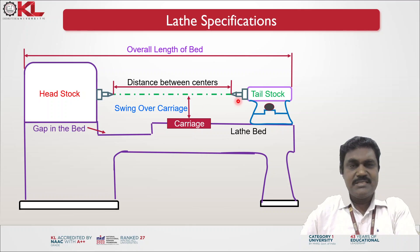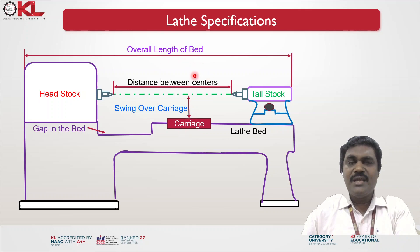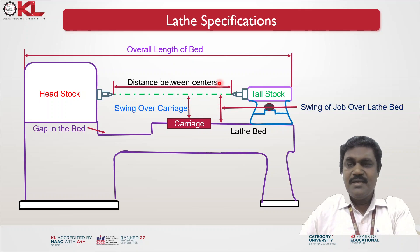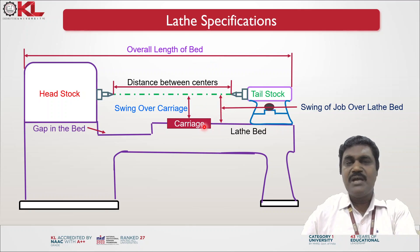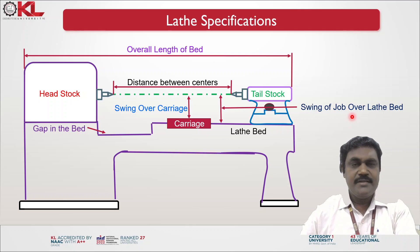Then swing over carriage — the maximum diameter of the workpiece that can rotate over the carriage is defined by this specification. Next is the swing of job over the lathe bed — the maximum diameter of the workpiece that can rotate over the lathe bed.